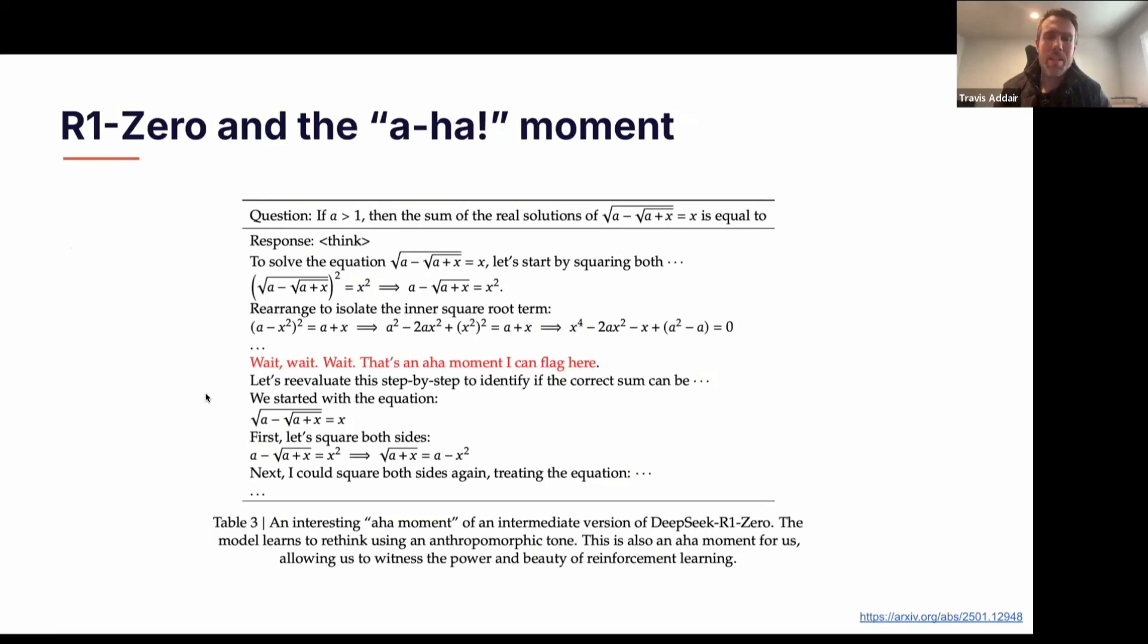This idea that these models can emergently develop novel strategies is something we've seen shades of in the past with different reinforcement learning strategies, like with alpha zero and things like that, but never really in the context of LLM fine tuning and chain of thought. This was really a novel discovery that came out of this.